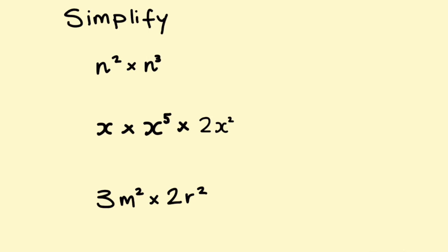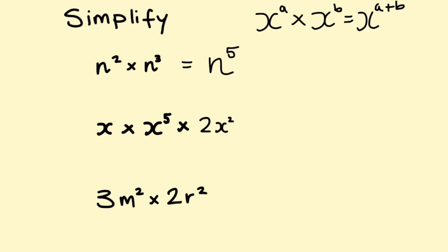You might get a question asking you to simplify. Here you need to remember that first law — you add those indices. So that's just 2 plus 3, giving n to the power of 5. This next one has a coefficient before one of the x's. Before you look at the x's, look at all the numbers and multiply those — I've only got a 2 so I just write that 2. Then look at the x's and their indices. Remember, x by itself has an implied power of 1 — not 0. So I've got x to the power of 1, x to the power of 5, and x squared. Adding 1 plus 5 plus 2 gives x to the power of 8.